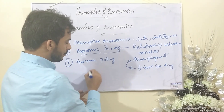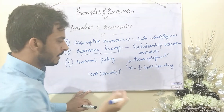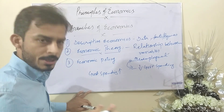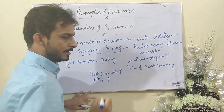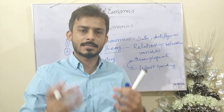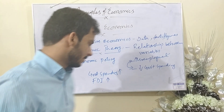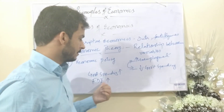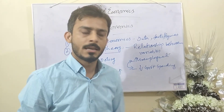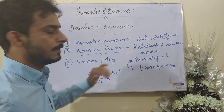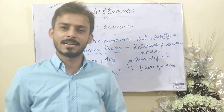Government spending should be increased in order to overcome unemployment and create jobs. Number two, foreign direct investment — FDI — should be increased. The government needs to provide an environment for global companies to come and invest directly in the country. FDI has a huge impact on job creation. For example, CPEC from China has recently created a lot of jobs in the country. So economic policy gives us the solution to the economic problem identified in economic theory.